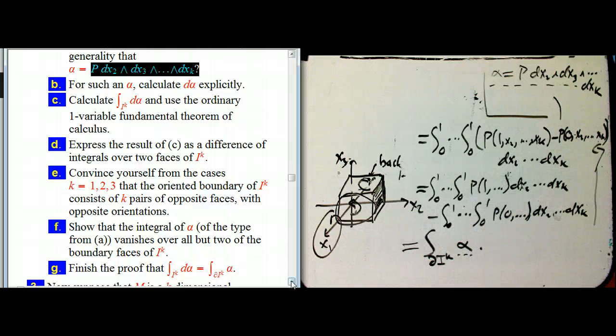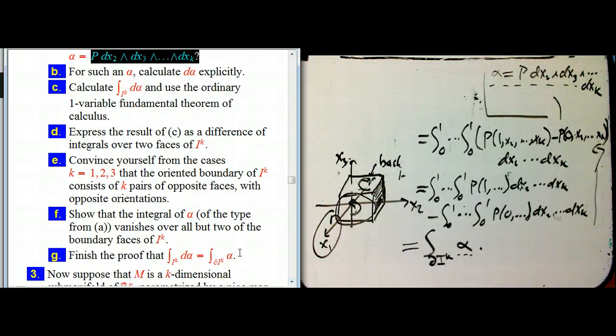And we just talked about how the integral of alpha of this type vanishes over everything but the faces that were identified here. And then that's it. We've got it. There's no other contribution. And we've got Stokes theorem for the unit cube.